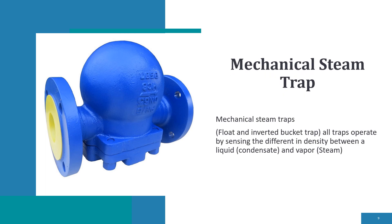Mechanical steam traps — float and inverted bucket traps — operate by sensing the difference in density between condensate and steam vapor.